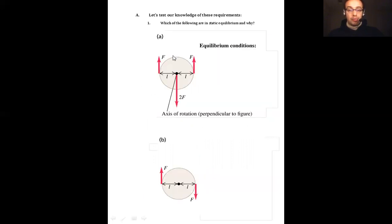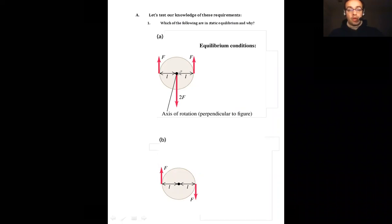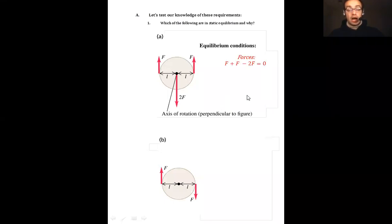Let's take a quick brain teaser. In which case are we dealing with equilibrium conditions? Looking at example A, we have a wheel with two forces pointing up on opposite ends and a force of 2F pointing down acting through the axis of rotation. The axis of rotation is perpendicular to the figure, so it's staring you right in the face, and the rotation is taking place in this xy plane.